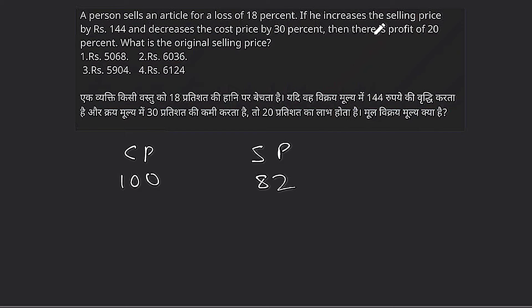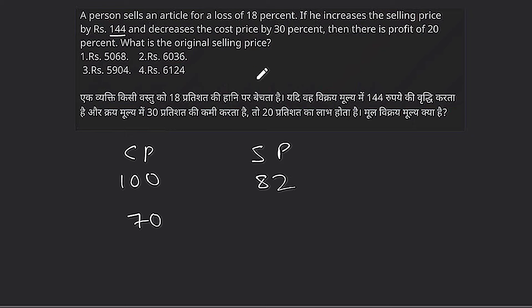He increases the selling price by rupees 1440 and decreases the cost price by 30%. A 30% decrease on cost price means cost price becomes 70% of original. With this new cost price, there is a profit of 20%.